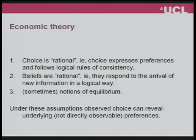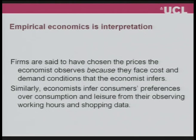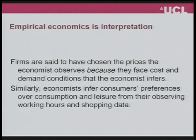Under these assumptions, what the economist does is he observes not directly observable preferences or not directly observable beliefs from observed choice. For example, you observe that firms have chosen particular prices and then you try to infer from these chosen prices the cost and demand conditions that the firm faces. Firms are said to have chosen the prices that the economist observes because they face cost and demand conditions that we have inferred. Similarly, if we turn to consumers, we observe working hours and shopping data, and from that we try to infer preferences over consumption and leisure that are again not directly observable.